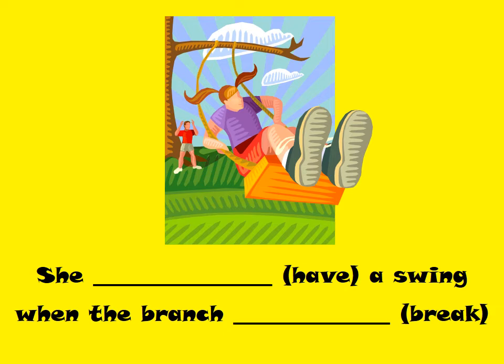She was having a swing when the branch broke. So she was having a swing when the branch — it interrupted her — broke.